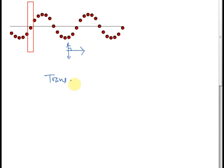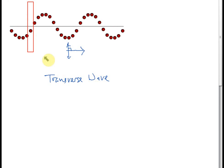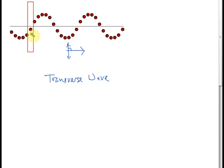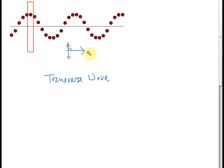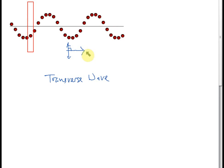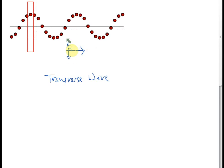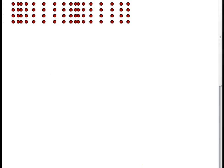So this type of wave is called a transverse wave. A transverse wave is a wave where the vibrations of the medium, or the particles of the medium, are perpendicular to the direction of propagation. The wave propagates to the right but the particles vibrate up and down — they are at right angles. This is a transverse wave.